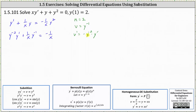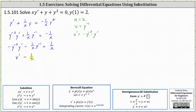From here, because v prime is equal to negative y to the power of negative 2 times y prime, and our first term is positive y to the power of negative 2 times y prime, before we perform the substitution, let's multiply through by negative 1. This gives us negative y to the power of negative 2 times y prime minus 1 over x times y to the power of negative 1 equals positive 1 over x. Now we perform substitution: the first term is equal to v prime, and y to the power of negative 1 is equal to v, giving us v prime minus 1 over x times v equals 1 over x.